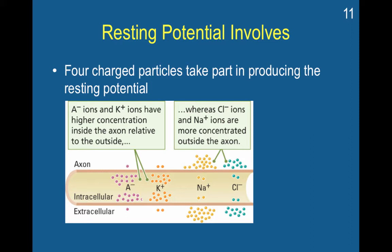The maintenance of resting potential involves four charged particles. You have negatively charged proteins — anions — and positively charged potassium ions, which have high concentration inside the axon relative to the outside. Inside the cell you have these negatively charged proteins and positively charged potassium. Whereas chloride ions and sodium ions are more concentrated outside the axon. So you have more of these outside the cell than inside.